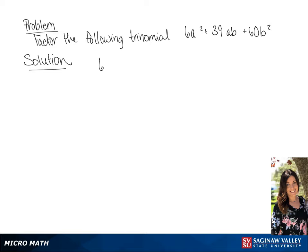We're factoring 6a² plus 39ab plus 60b². We know that all of these numbers have a factor of 3 in common, so we are able to pull out the 3,